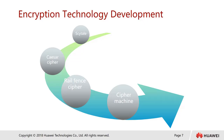Finally, we have the cipher machine, which began to gain popularity in the Second World War. The German Nazis had something called the Enigma machine to perform encryption of text. These are the developments of encryption technologies.